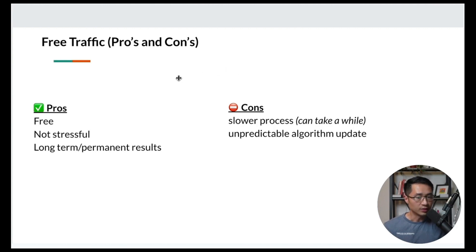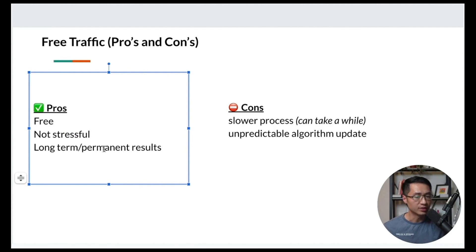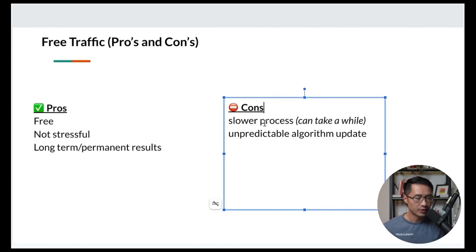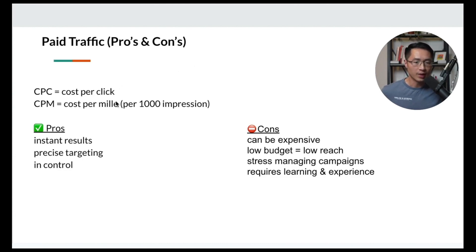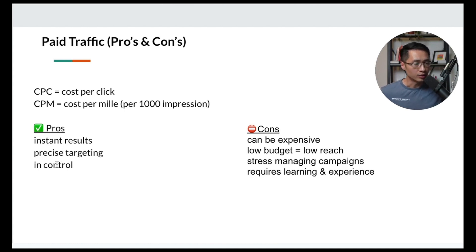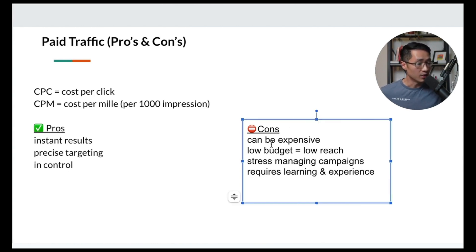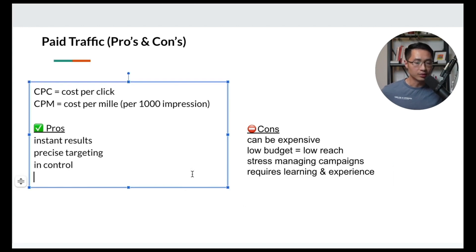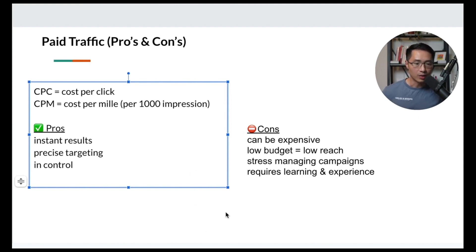The pros of free traffic: it's obviously free, not stressful, and results are often long-term or permanent. The cons: it's a slower process that can take a while, and you may have to deal with unpredictable algorithm updates. For paid traffic, the pros are instant results and precise audience targeting, putting you in control of how much traffic you send. The cons: it can be expensive, a low budget means low reach, managing campaigns can be stressful, and it requires learning and experience. The smart approach is to promote your affiliate links using free methods first, and after getting results, then consider whether to use paid traffic.